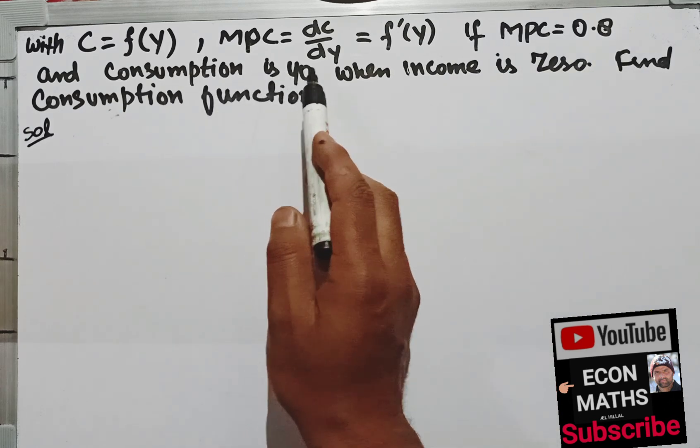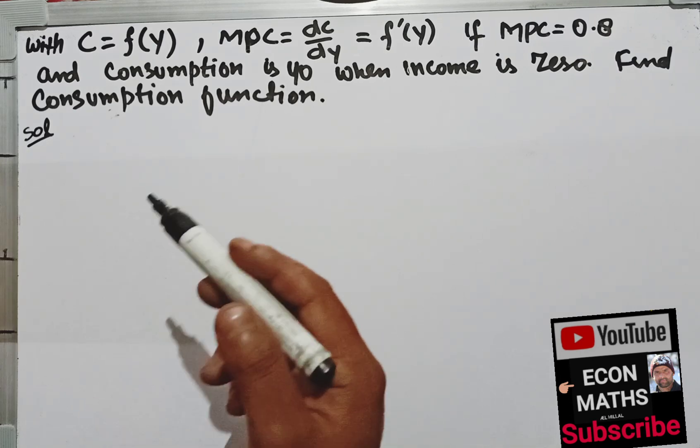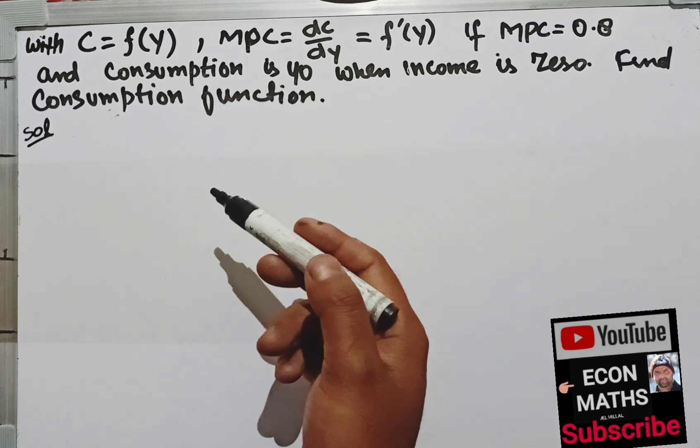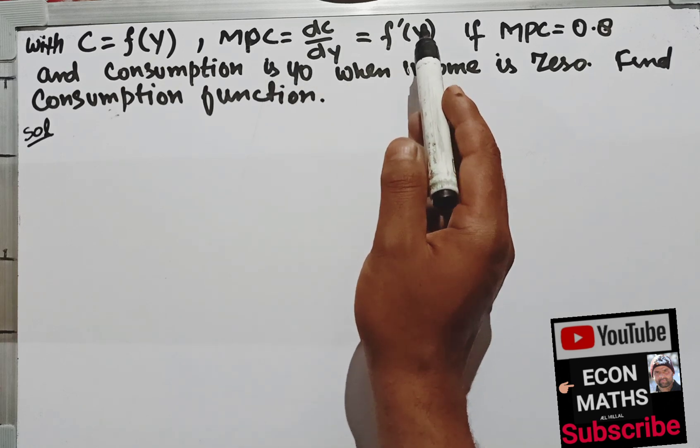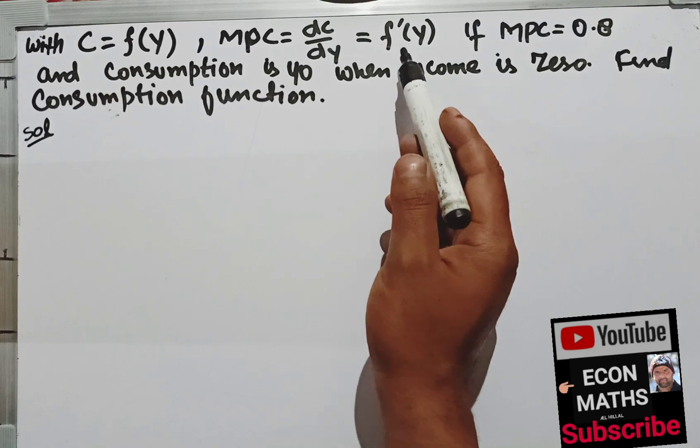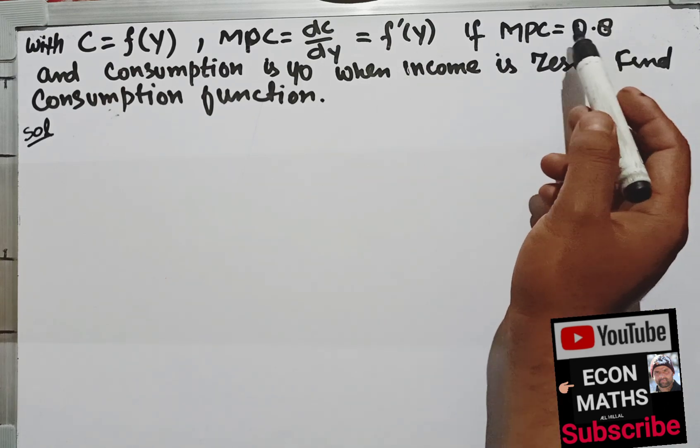and consumption is 40 when income is 0, find consumption function. So to find the consumption function we will integrate this MPC, that is f dash y, with respect to income. The MPC is given as 0.8, we will integrate this.